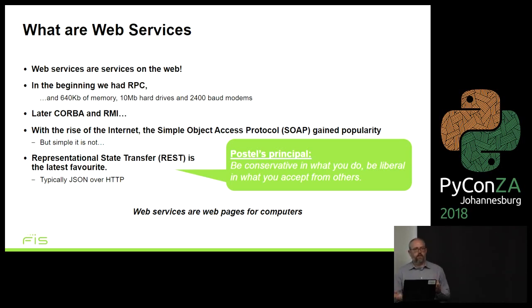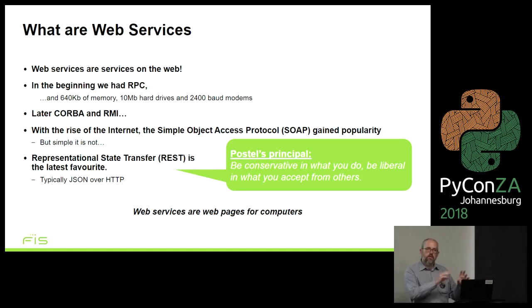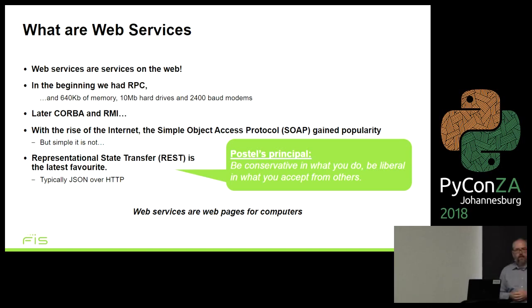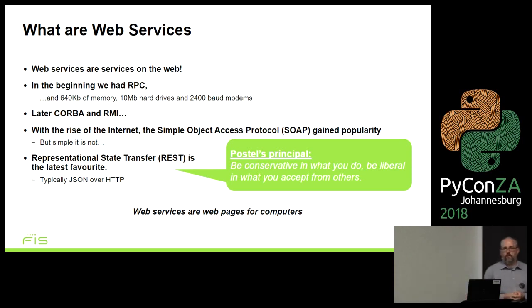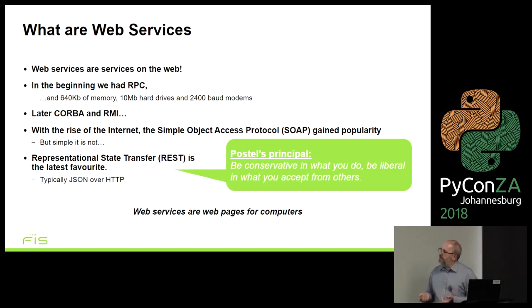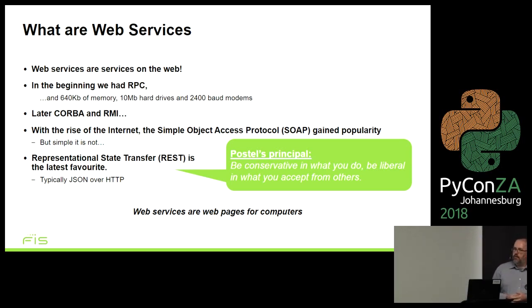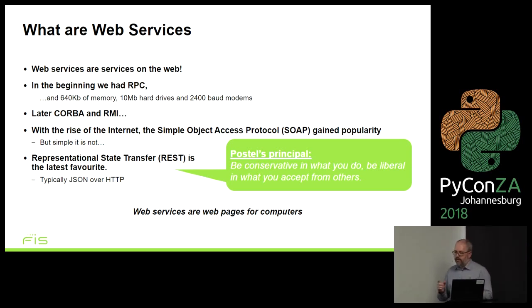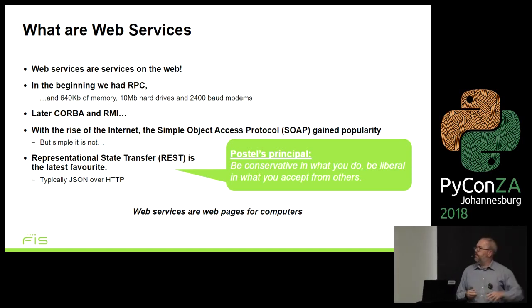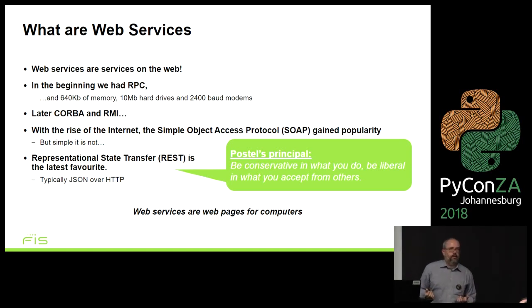Over time there was a need to send function calls across the network to other systems, so we developed protocols like RPC - remote procedure calls. Then products like CORBA and RMI, which is the Java protocol - a way to make function calls across the network, passing parameters and getting a result back, just like programming but the computer you're programming against is somewhere else. Then the internet came along and changed everything.